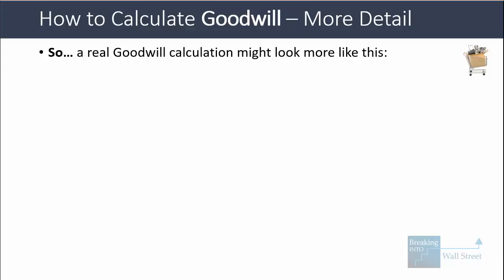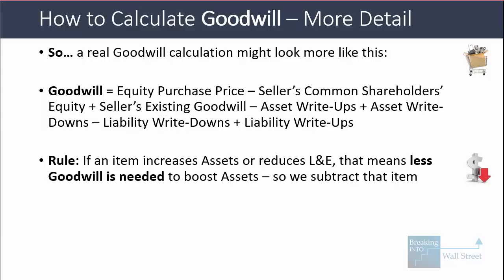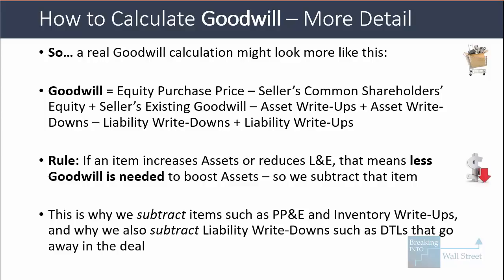In reality, a real goodwill calculation might look more complex. The rule is: if an item increases assets or reduces liabilities and equity, less goodwill is needed to boost assets to balance the balance sheet. Therefore, we subtract any item that increases assets or reduces the liabilities and equity side. This is why we subtract items like PP&E and inventory write-ups. It's also why we subtract liability write-downs such as deferred tax liabilities that go away in the deal.